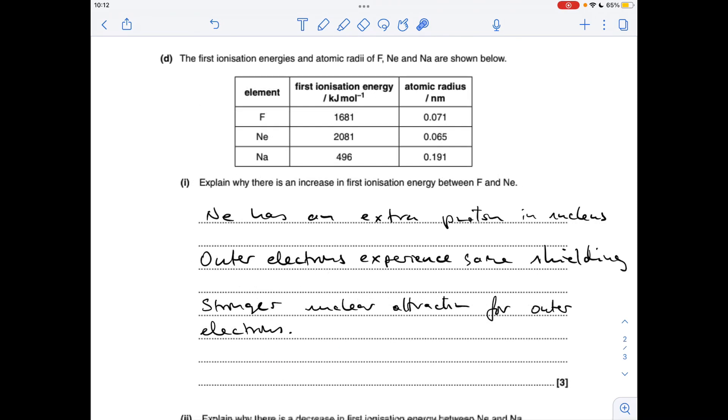So part D now picks up the periodicity topic, so we've got to explain the trend in first ionisation energy going across a period, effectively, because we're going from fluorine to neon. So neon's got an extra proton in its nucleus.